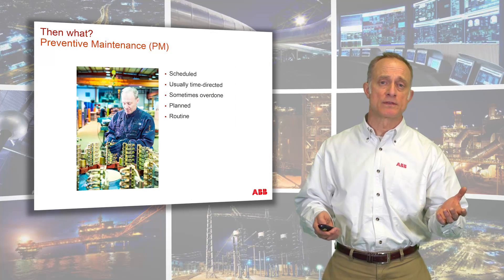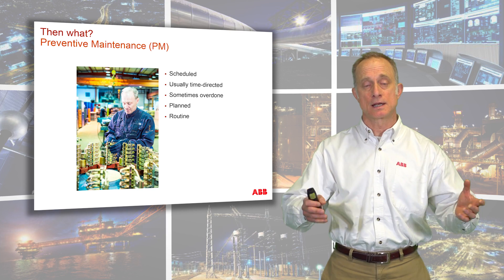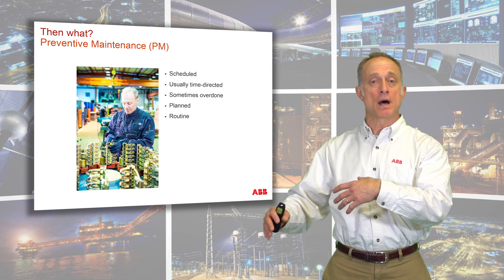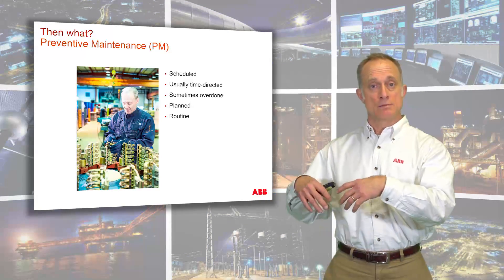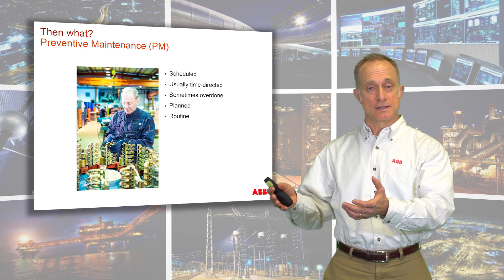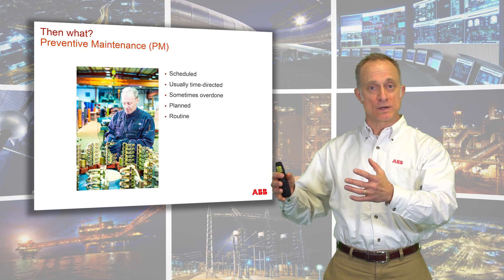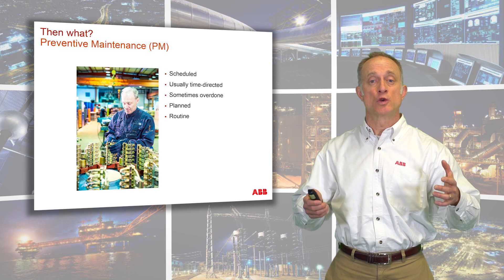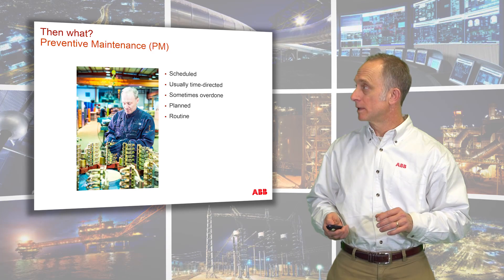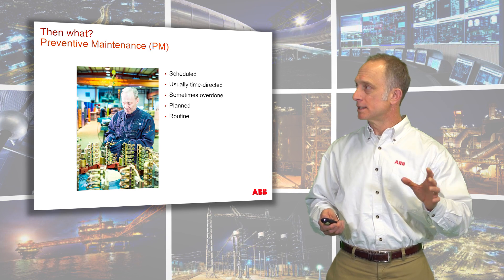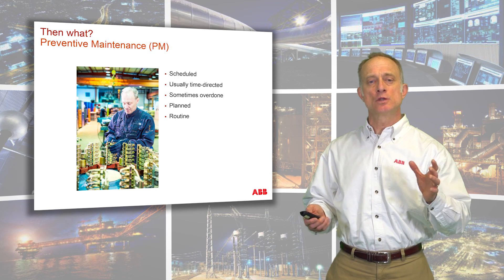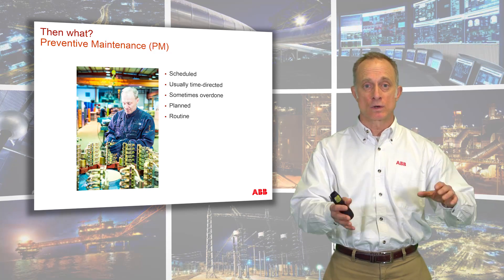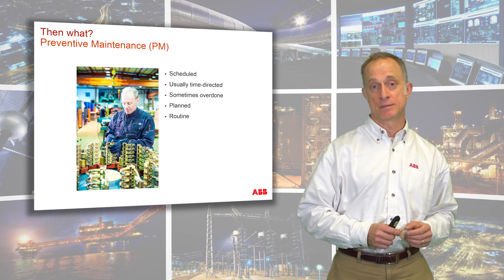We've already discussed preventive maintenance — that's the next step. If we can address something that might break on a piece of equipment before it breaks, then we're a step ahead of the game. It's possible to do too much preventive maintenance, but still that's a step in the right direction. It's usually time directed — we do it on a regular basis, for example, every six weeks we're going to lubricate a piece of machinery.